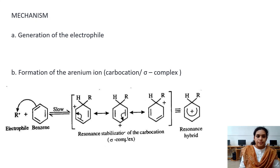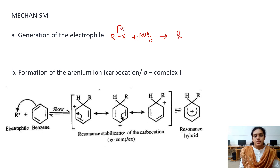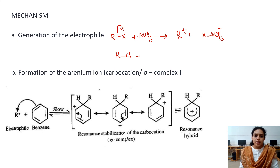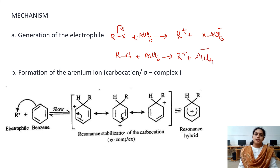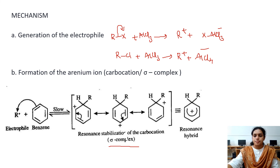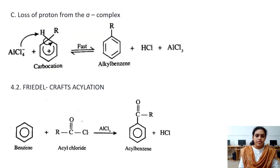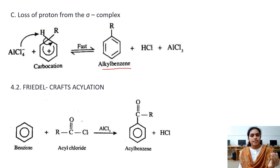The mechanism follows the same pattern. Step 1: RCl + AlCl3 → R+ + AlCl4- (electrophile generated). Step 2: R+ attacks the benzene ring to give a sigma complex. Step 3: the sigma complex is cleaved to give the corresponding alkylbenzene + HCl + AlCl3. AlCl3 is regenerated since it is the catalyst.